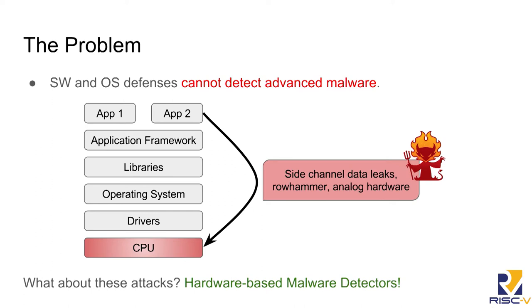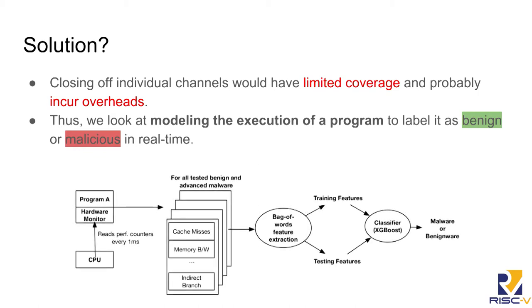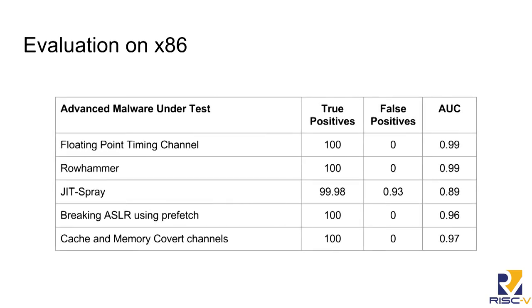However, they cannot detect advanced malware like side-channel data leaks, Rowhammer, and analog hardware attacks that directly affect the CPU. The answer is hardware-based malware detectors. Closing off individual side channels has limited coverage and tackles the symptom, not the problem. Instead, we model the execution of a program accurately to label it as benign or malicious. Our results on x86 against advanced malware — floating point timing side channels, Rowhammer, JIT spray, prefetch side channels, cache and memory bus covert channels — show true positives of greater than 99% and false positives of less than 1%.